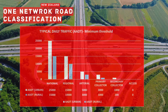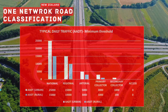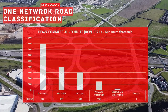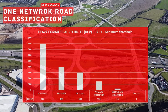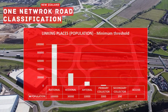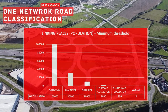Here is the minimum threshold of typical daily traffic. Urban roads and rural roads have different thresholds within the same category. Here is the minimum threshold for heavy commercial vehicles per day. And here is the minimum threshold to measure linking of places under economic and social criteria.